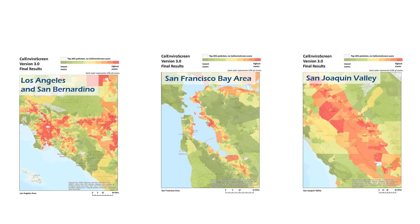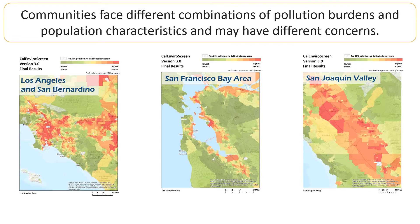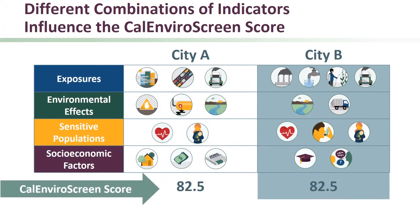However, communities across the state vary in the types of pollution burden and population characteristics that can result in a high score. A community in the San Francisco Bay Area may have different concerns than a community in the San Joaquin Valley. Since the CalEnviroScreen model uses information from many different indicators, there could be different factors that influence the overall CalEnviroScreen score.